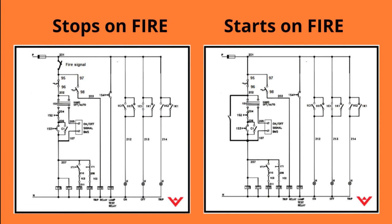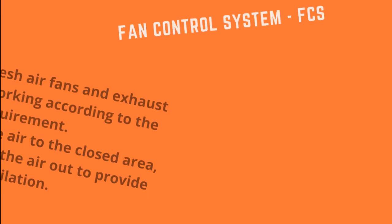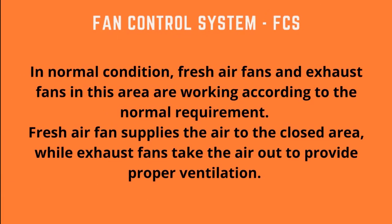The single line diagram shown here shows the fan control circuits for starts on fire and stops on fire. In normal condition, fresh air fans and exhaust fans in this area are working according to normal requirements. Fresh air fans supply air to the closed area, while exhaust fans take the air out to provide proper ventilation.